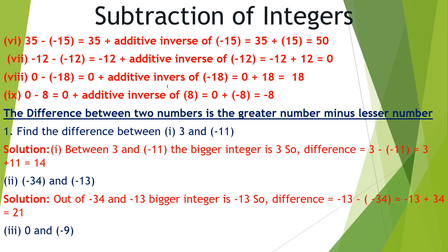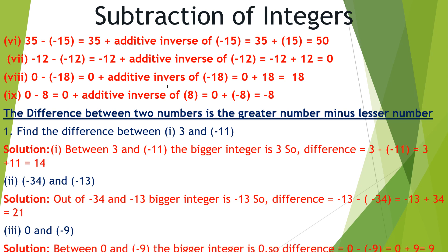The third one is the difference between 0 and minus 9. Since 0 is the bigger integer, the difference is 0 minus minus 9, which equals 0 plus 9, equals 9.